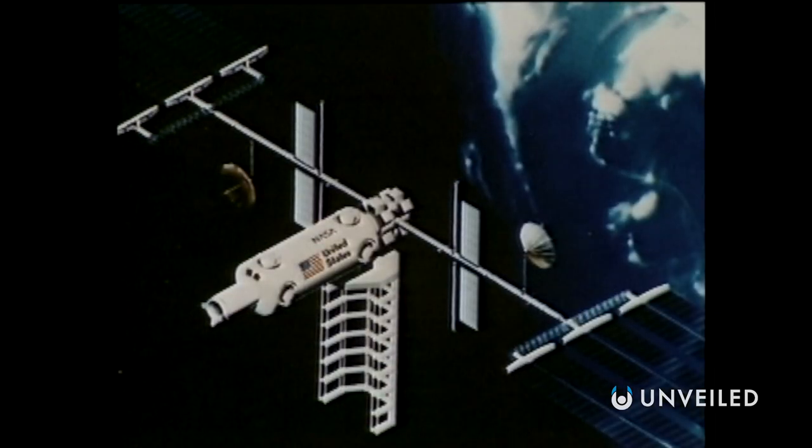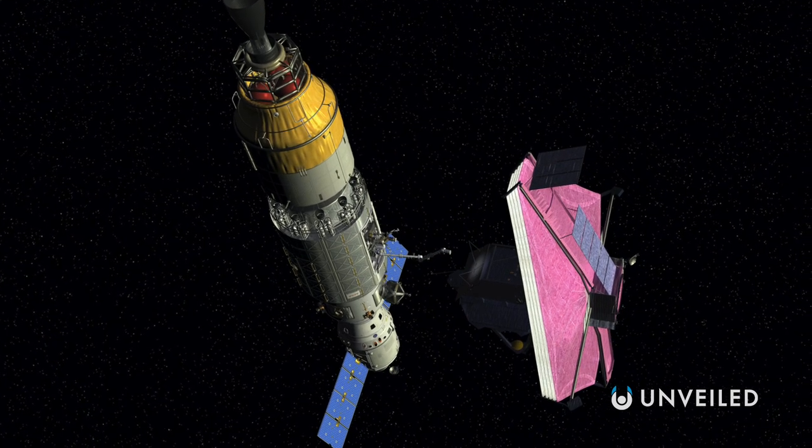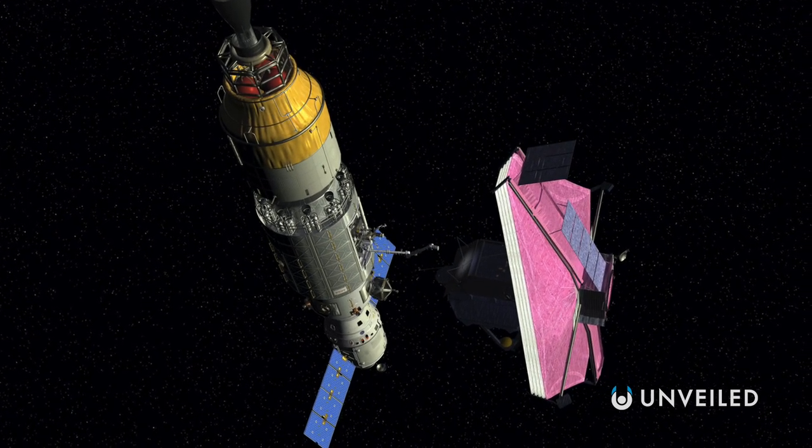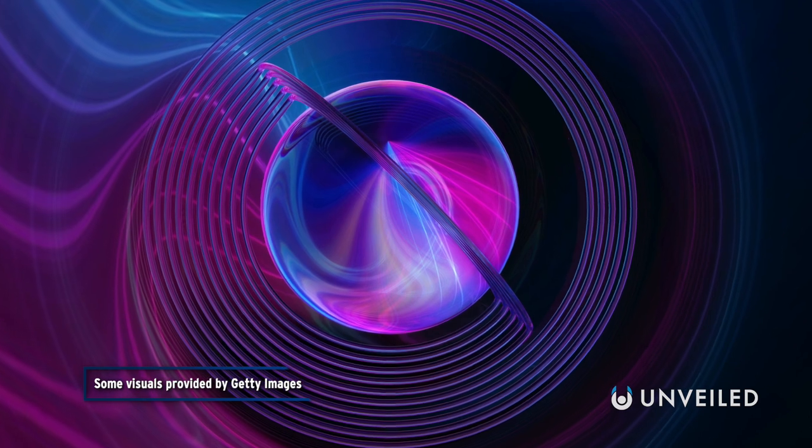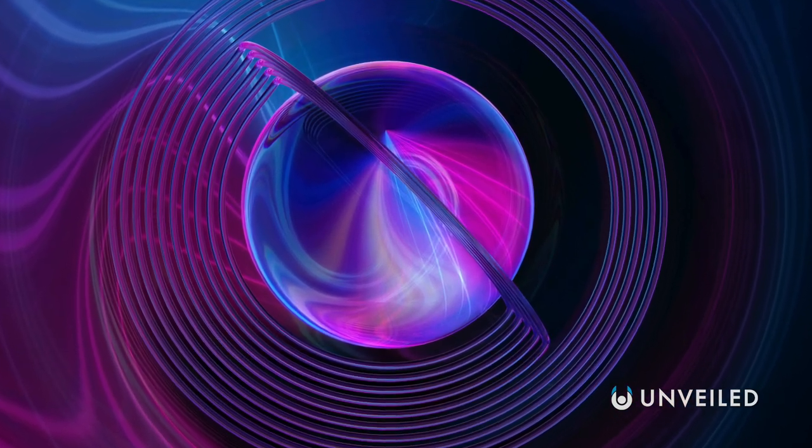It'll be a few months, even after launch, before Webb starts sending images back to Earth. But when it does, we can expect those images to outshine all that have come before them. The universe will never have looked quite like this. And that's all you need to know about the James Webb Space Telescope.